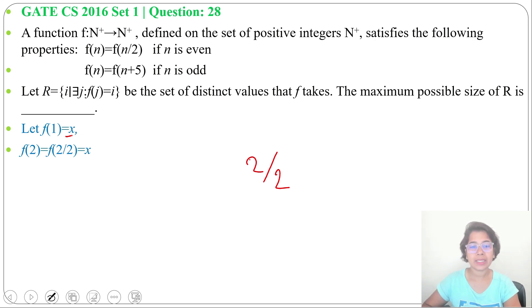Now consider f(3). 3 is an odd number, so it will be f(3+5). 3+5 is 8. Now we got 8. 8 is an even number, so f(8) will be f(8/2), it's 4.